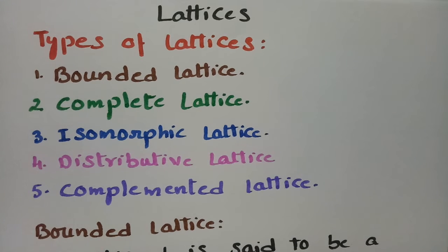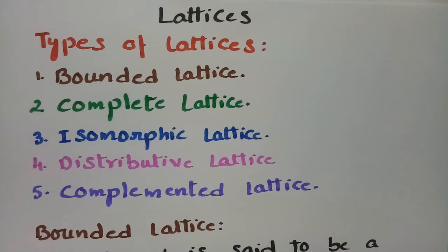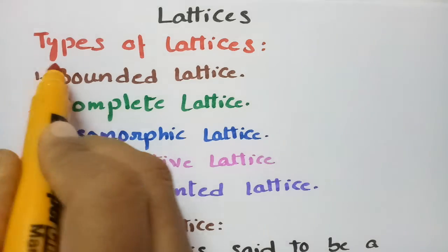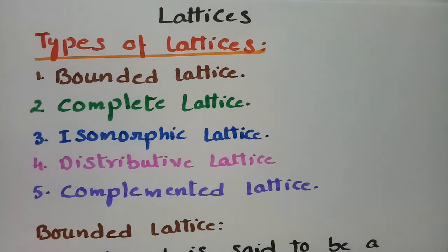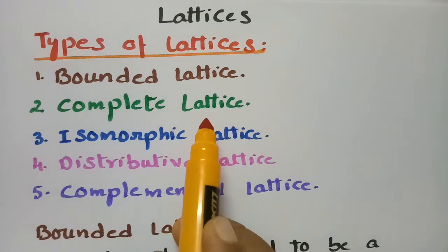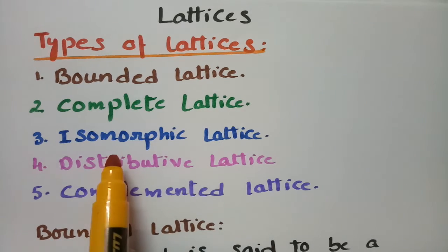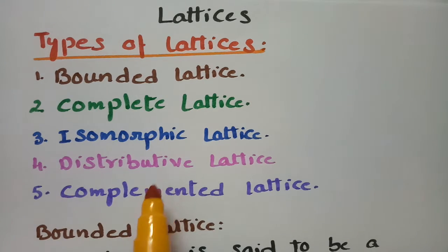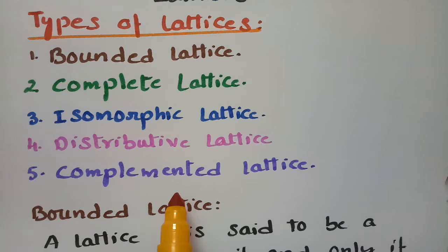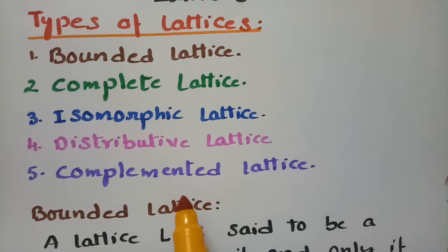Today's video is on types of lattices, and this topic is related to discrete mathematics. The types of lattices we will discuss are: bounded lattice, complete lattice, isomorphic lattice, distributive lattice, and complemented lattice. Let us discuss all the definitions of these types.